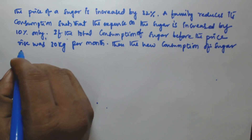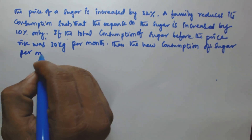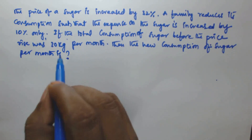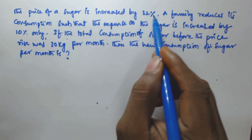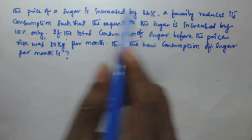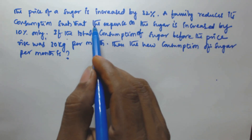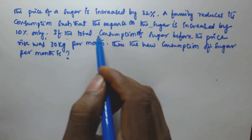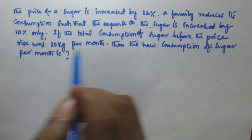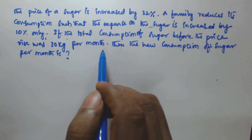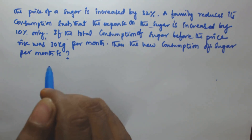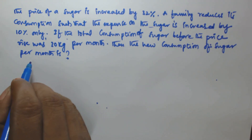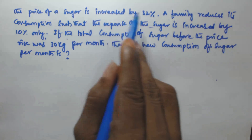So it is given that the price of the sugar is increased by 32 percentage. A family reduces consumption such that the expense on the sugar is increased by ten percentage only. If the total consumption of sugar before the price rise was 30 kg per month, then the new consumption of sugar per month is. Let the initial price of the sugar be assumed.